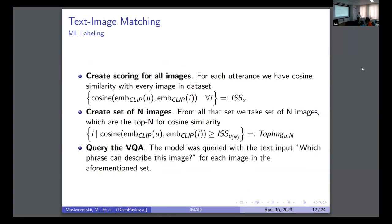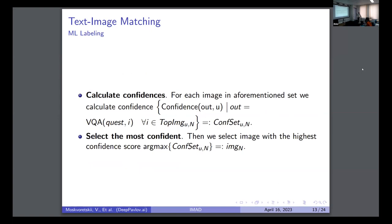Next, we have a little pipeline. We first create scoring for all images. So each image will have a scoring with each utterance. Then we create a set of n images. We'll choose some n, for example it would be 10. It would be the top 10 images by image score from our dataset for one utterance. Then we query the VQA model, like which phrase can describe this image. What we expect to have is that we calculate the confidence there and we choose the image on which the model was most confident. It means we are choosing not the first image by cosine similarity, but we are getting n images with the top cosine similarity, and then using the VQA model to find the best of them.